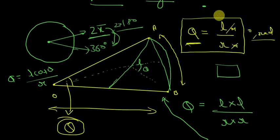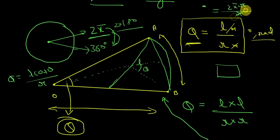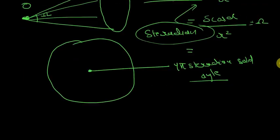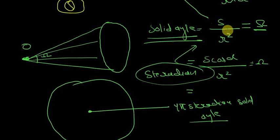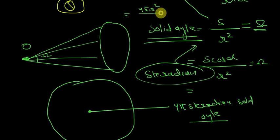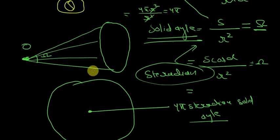From this analogy: the length of a circle is 2πR, and dividing by R gives 2π — so a circle subtends a 2π radian angle. The surface area of a sphere is 4πR², and dividing by R² gives 4π — so a sphere subtends 4π steradians of solid angle.